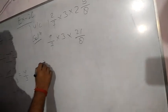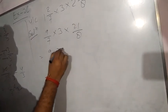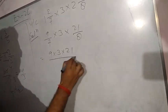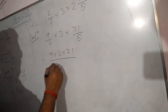Now numerator to numerator, that means 9 into 3 into 21, by 7 into 8.